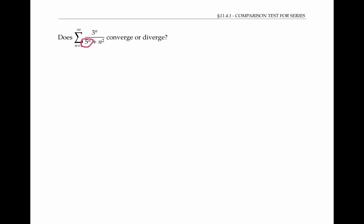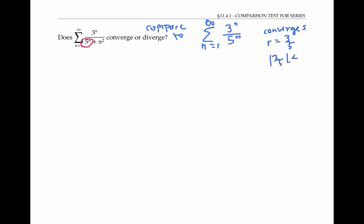For that reason, the behavior of the series should be similar to the series three to the n over five to the n, where we've left out the n squared term, which is insignificant compared to five to the n when n is large. So we'll compare our given series to this geometric series, which we know converges because it has a common ratio of three fifths, and the absolute value of three fifths is less than one.